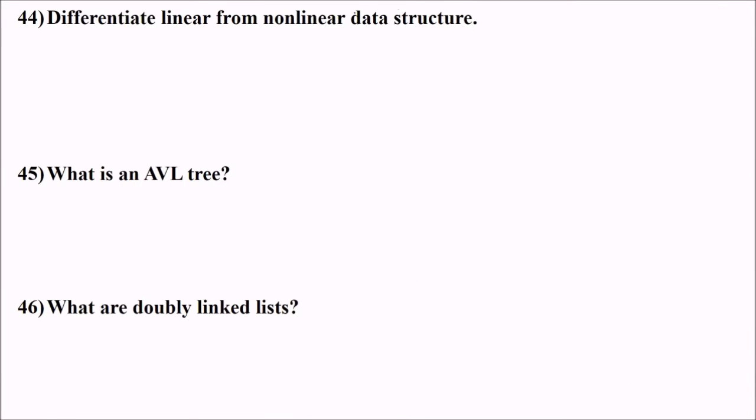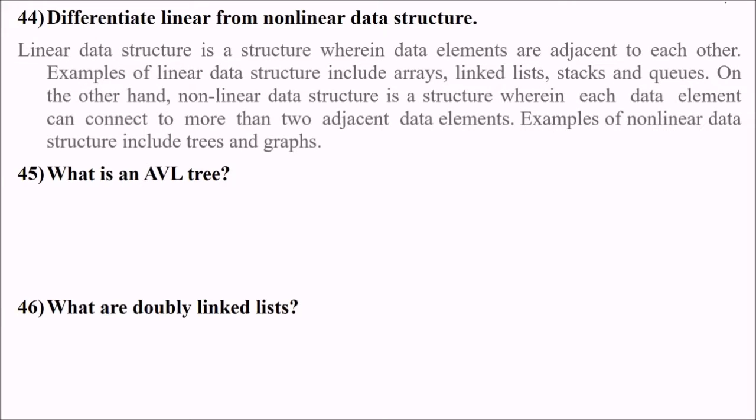44 is differentiate linear from non-linear data structure. Linear data structure is where data elements are adjacent to each other. For example, you have arrays, linked lists, stacks, and queues. While non-linear data structure is structured wherein each data element is connected to more than one adjacent element. For example, trees and graphs. This is the difference between linear and non-linear data structures.